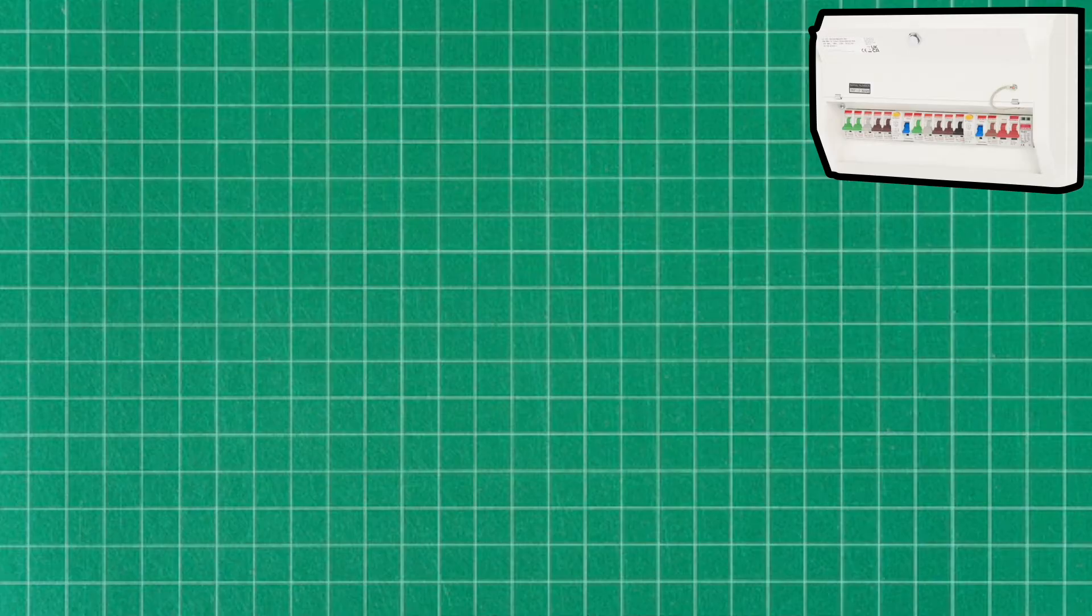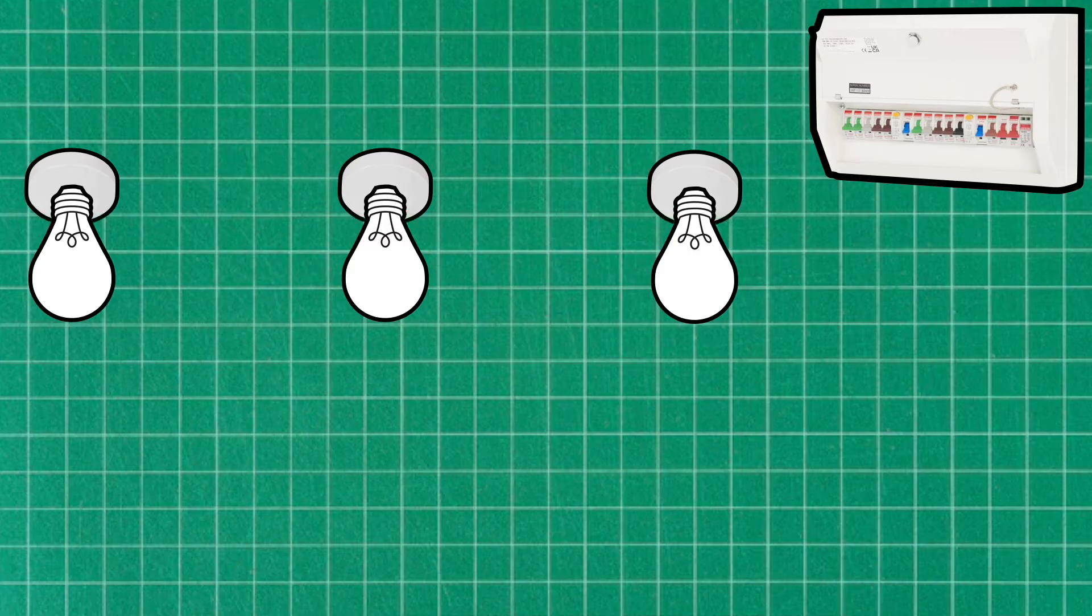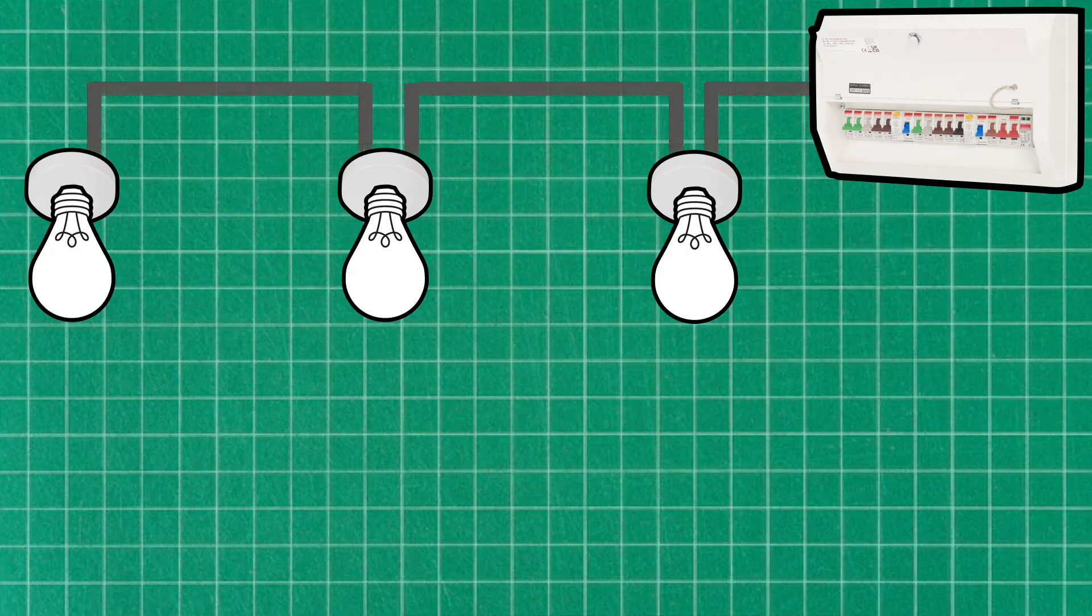So let's take a quick look at an example now just so we can understand this concept a little better. So I'm going to go ahead here and draw in a lighting circuit. At the top right of the screen I've got my consumer unit, then I've got three light pendants, and these will be wired in with basic 1.5 mil twin and earth cable. So as you can see from the graphic there, the twin and earth starts from the consumer unit and then daisy chains from one light pendant to the next. And as the circuit is radial, it finishes at the last lamp.